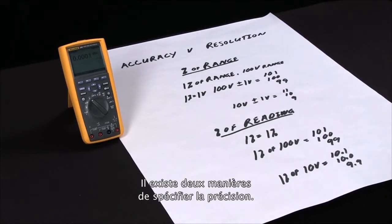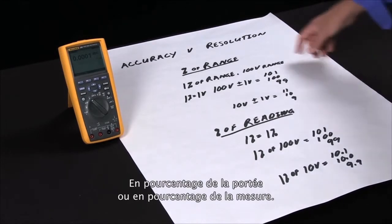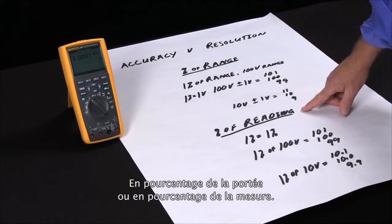So there's two ways we have accuracy specified. One is in percent of range and one is in percent of reading.